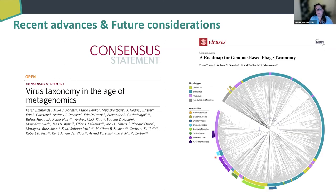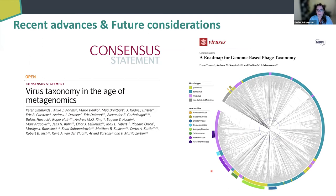The second advance is what we put out in our roadmap for genome-based phage taxonomy paper, together with Dan Turner and Andrew Kropinski. We wanted to move from tailed phages traditionally classified into morphology-based families — Myoviridae, Podoviridae, Siphoviridae — based on tail structure and tail length. In a protein-based clustering tree, you can see that each of those families is not monophyletic. So what we're now doing is breaking open these groupings and creating new families for each subset, but doing so we also need to come up with new family demarcation criteria.